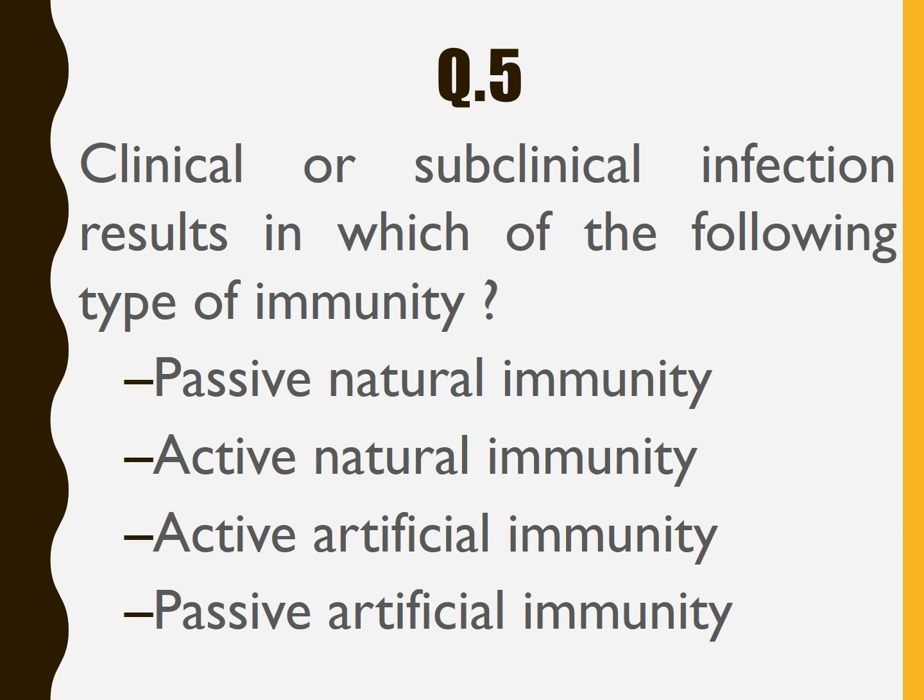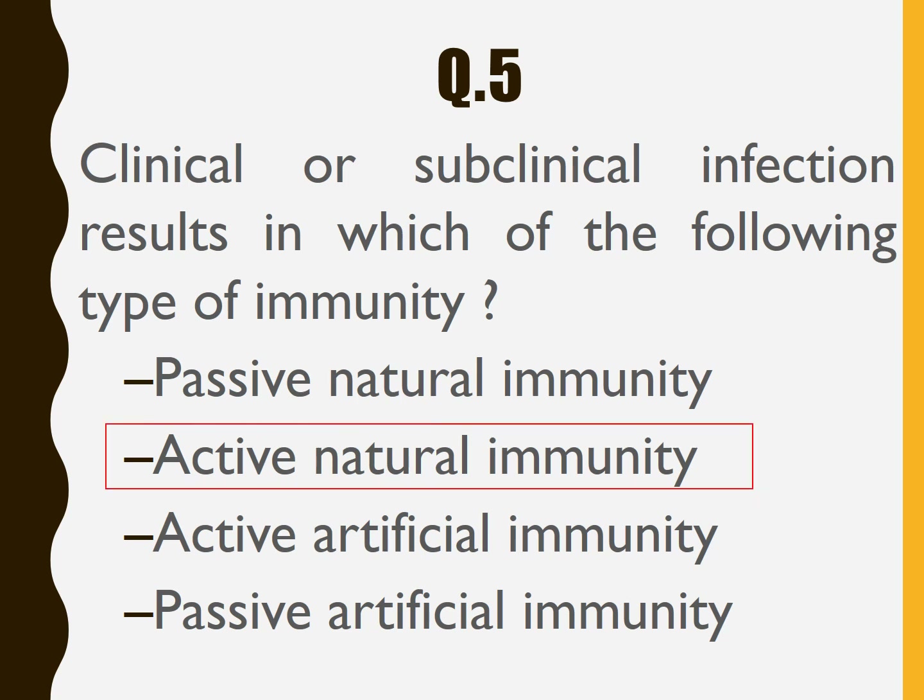Question number 5: Clinical or subclinical infection results in which of the following type of immunity? Options are passive natural immunity, active natural immunity, active artificial immunity, and passive artificial immunity. The answer is active natural immunity.